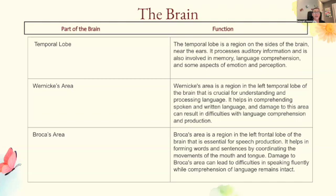Wernicke's area is a region in the left temporal lobe of the brain that is crucial for understanding and processing language. It helps in comprehending spoken and written language, and damage to this area can result in difficulties with language comprehension and production. This often shows up in MCQ questions, so it's good to know — Wernicke's area is language. Broca's area is a region in the left frontal lobe that is essential for speech production; it helps form words and sentences by coordinating movements of the mouth and tongue. Damage to Broca's area can lead to difficulties speaking fluently while comprehension remains intact.